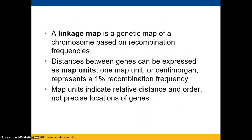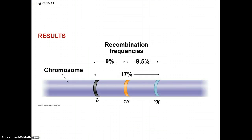You can also have a linkage map, and that's a genetic map of a chromosome based on recombination frequencies. The distance between genes can be expressed as map units, and one map unit, or centimorgan, represents a 1% recombination frequency. Map units indicate the relative distance and order, but not precise locations of genes. For example, gene B and Cn has a 9% frequency, and there's a 9.5% frequency between Cn and Vg.